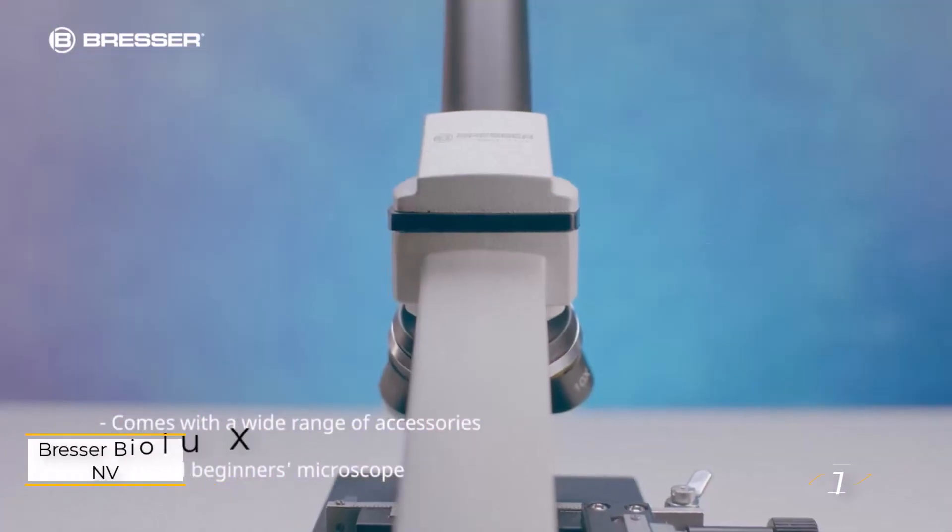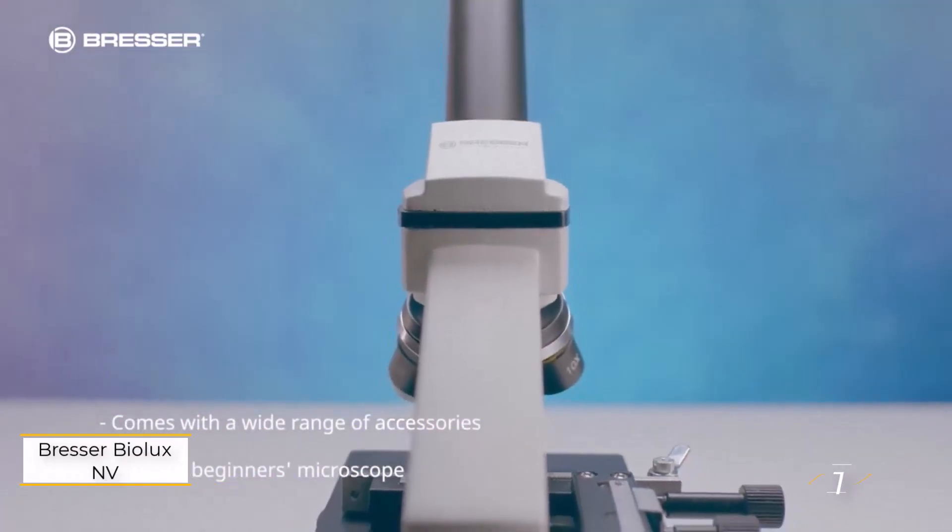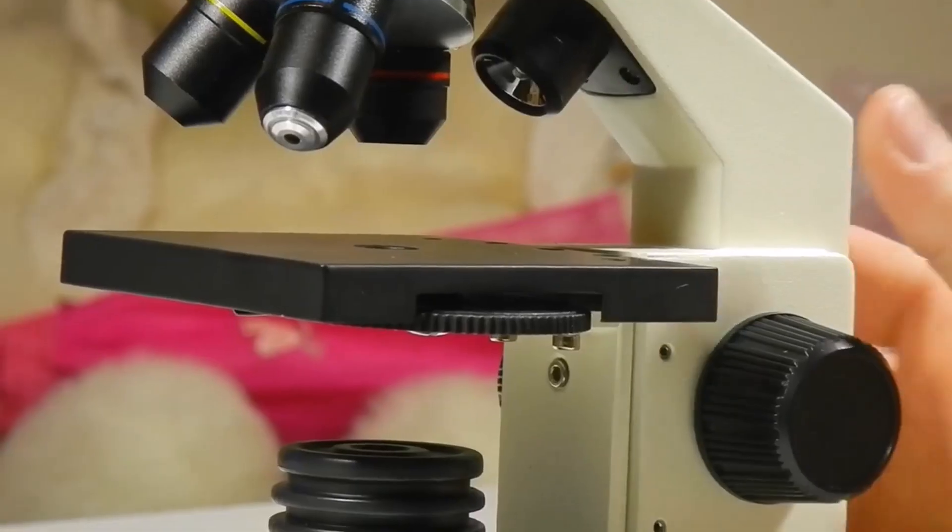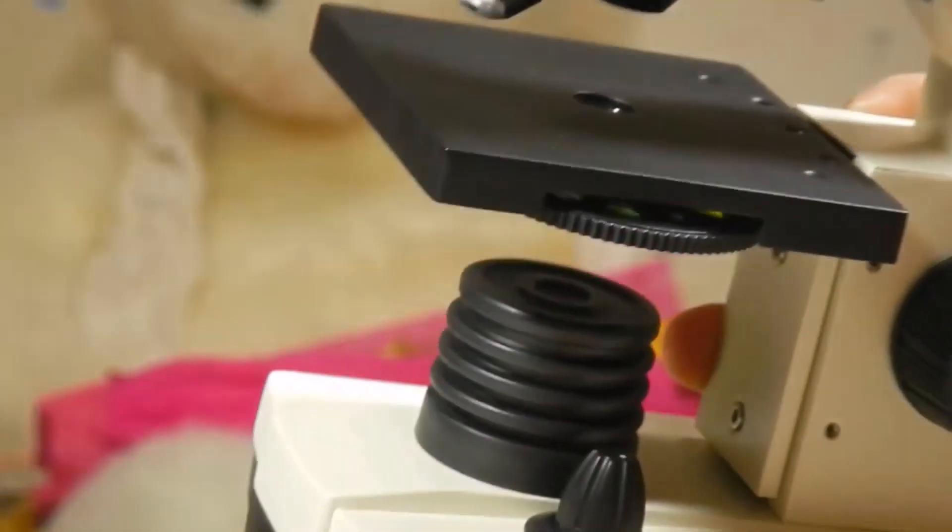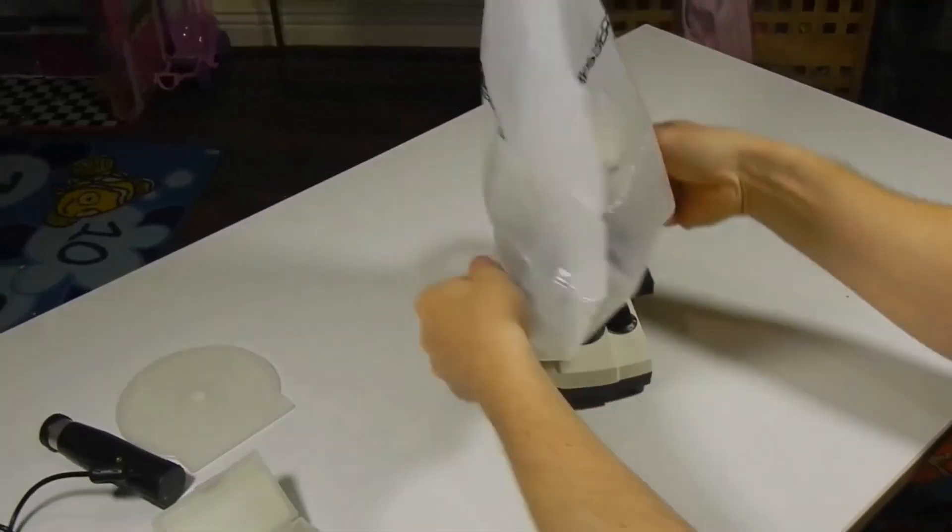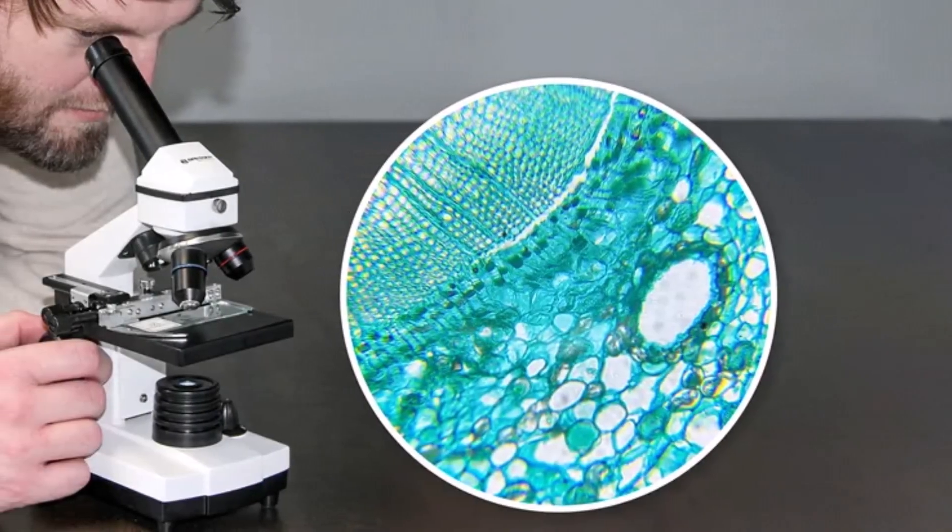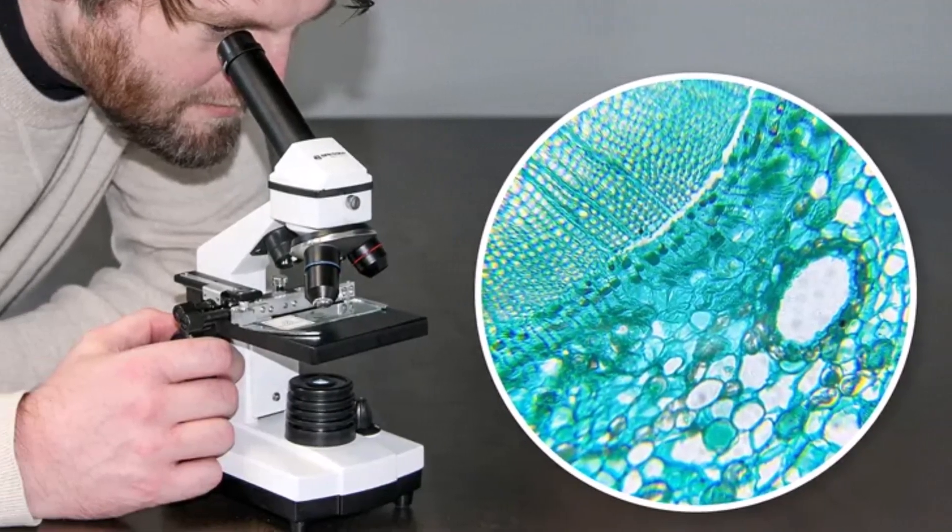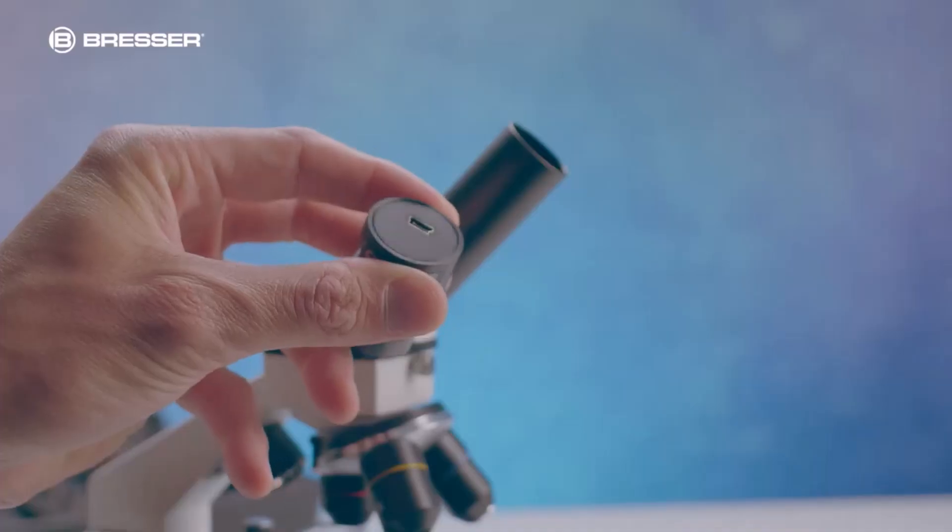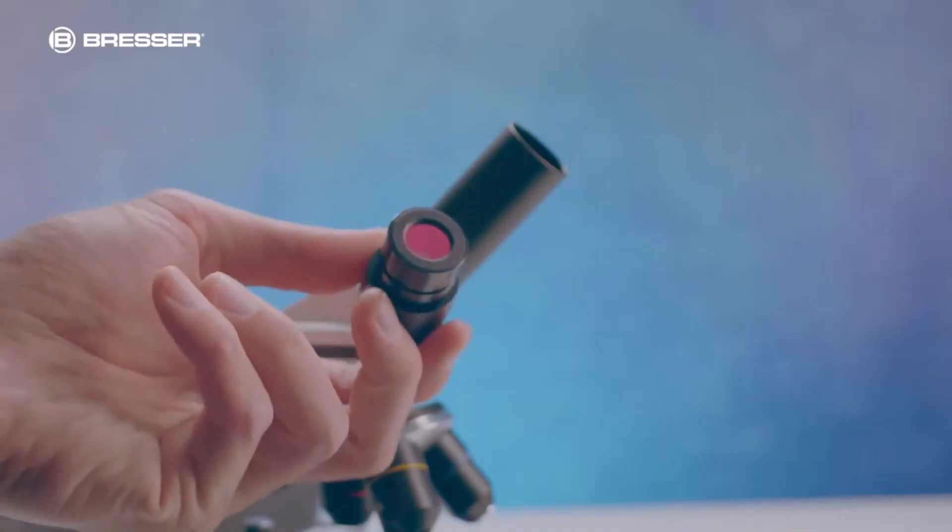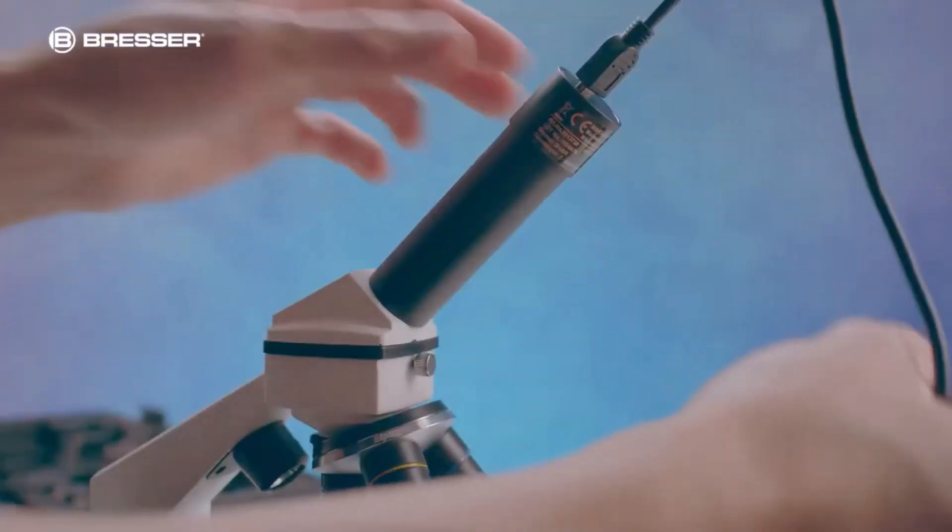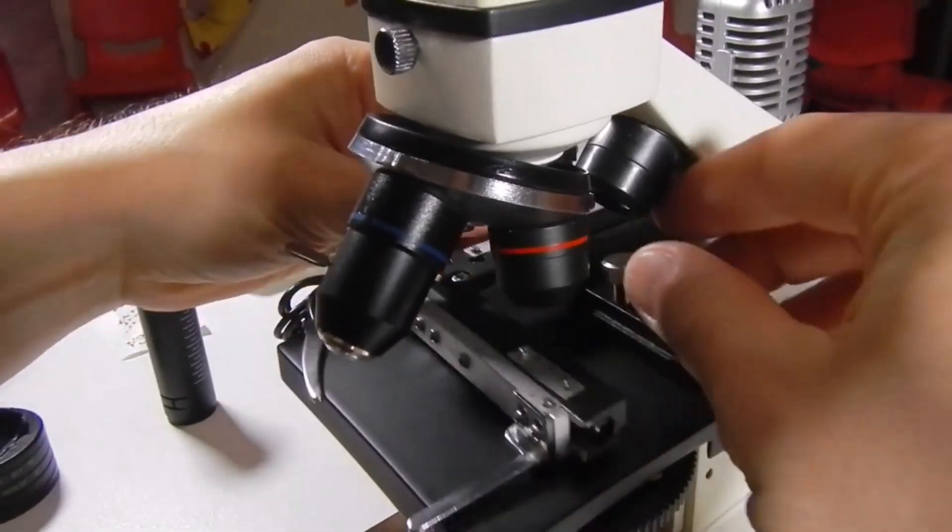Number one: Bresser Biolux NV20X to 1280X. Just getting started with microscopes? The Bresser Biolux NV20X to 1280X is perfect for beginners and suitable for advanced users too. This device includes many accessories, an LED lamp with eight brightness levels, a filter wheel with five colors and various filters. Excitingly, this mid-priced metal and plastic microscope from German brand Bresser features a built-in camera, allowing you to preserve and study your microscopic examinations.